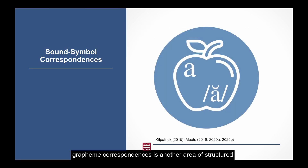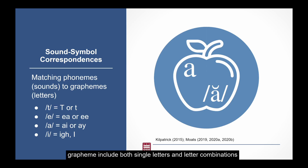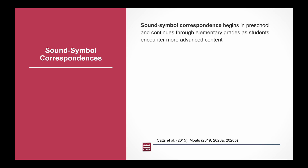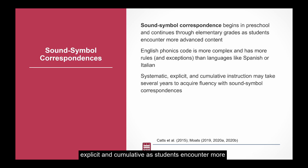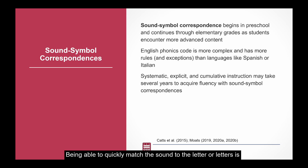Sound-symbol (phoneme-grapheme) correspondences is another area of structured literacy intervention that supports students with dyslexia. An alphabetic writing system like English represents its language sounds, or phonemes, with alphabet letters, or graphemes. Graphemes include both single letters and letter combinations to represent language sounds or phonemes in print. The phonics, or alphabetic code, for written words is the system of correspondences between phonemes and graphemes. The correspondences between letters and speech sounds in English are more complex and varied than languages like Spanish or Italian. Direct instruction in letter-sound correspondences should be systematic, explicit, and cumulative, as students encounter more advanced language and reading content in school. Students with dyslexia benefit from explicit and direct instruction in sound-symbol correspondence, or matching language sounds to symbols, both individual letters and letter combinations. Being able to quickly match the sound to the letter or letters is directly related to being able to blend sounds together to make a word.